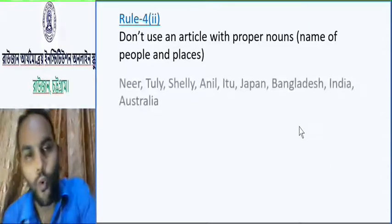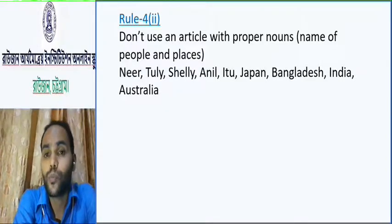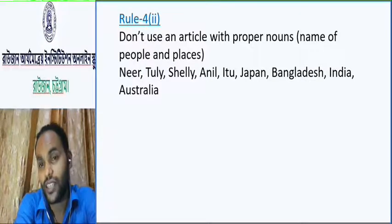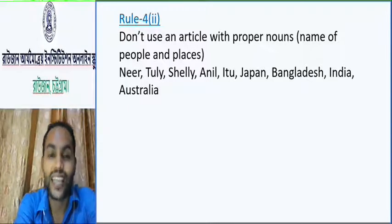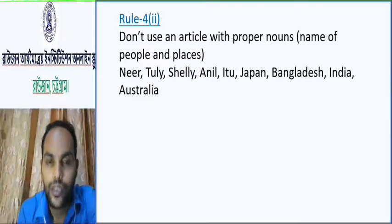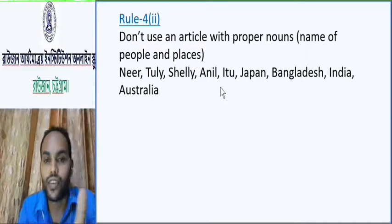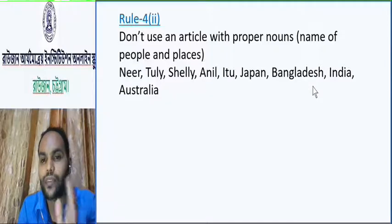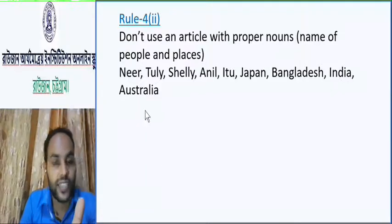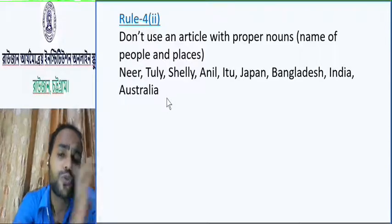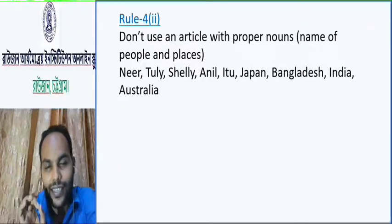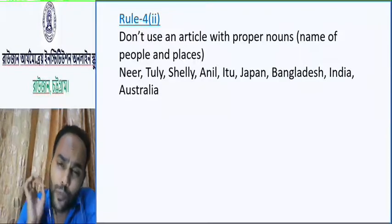Rule number four: Don't use an article with proper nouns — name of people and places. Proper nouns refer to names and places. For example — suppose: Shubhajit, Neer, Tuli, Shelly, O'Neill. These are names of people. Japan, Bangladesh, India, Australia — these are names of places. So we don't use an article with proper nouns. I think you got it. Proper nouns mean the name of people and places.